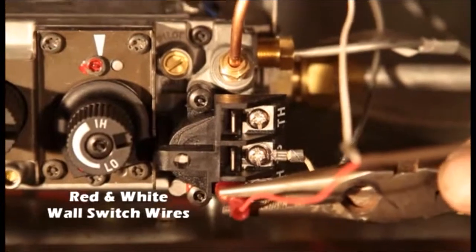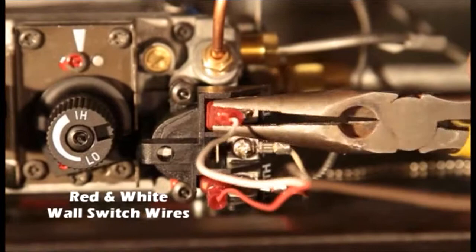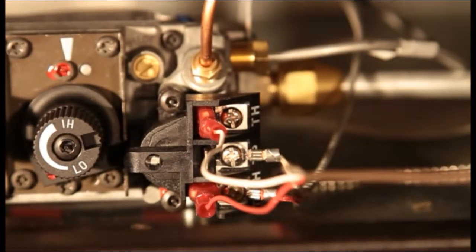Connect the red wire to terminals marked TPTH. Connect the white wire to terminal marked TH. These are the top and bottom terminals of the control valve.